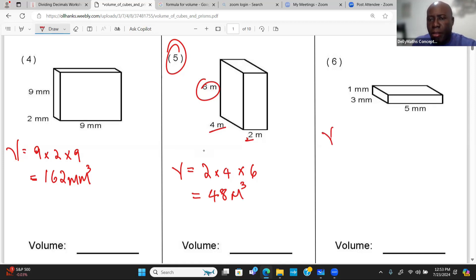The last one here, same formula. 5 times 3 times 1. And that's going to give us 15 millimeter cube.